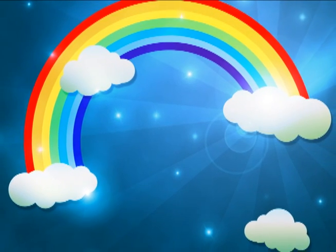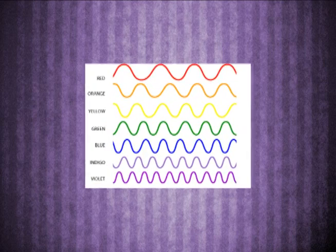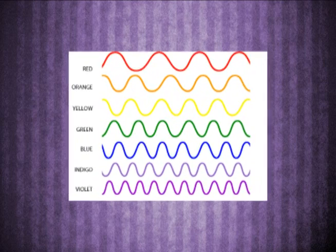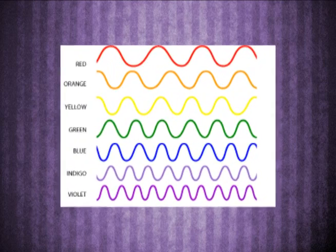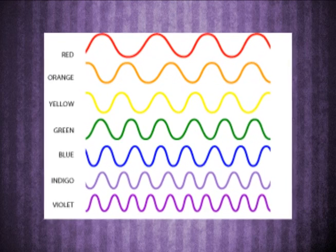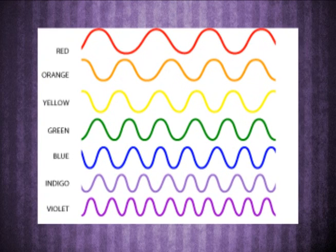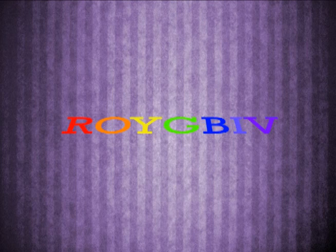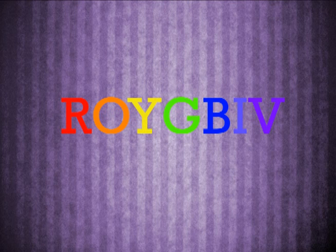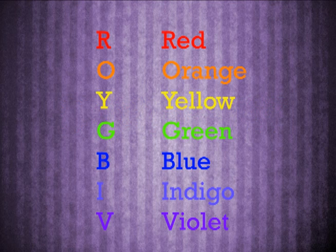The most common acronym still used today is probably for learning all seven colors of a rainbow. For example, when trying to memorize all seven colors of a rainbow, we first form a word by grouping the first letter of each color together, which becomes the word ROYGBIV. This word is abbreviated for red, orange, yellow, green, blue, indigo, and violet.